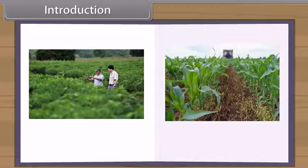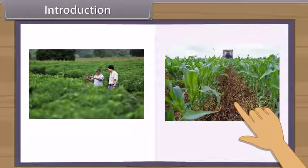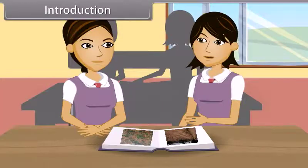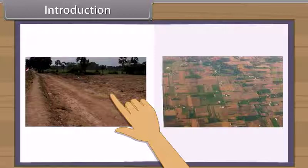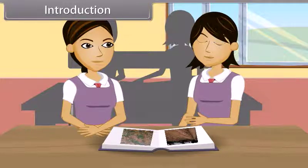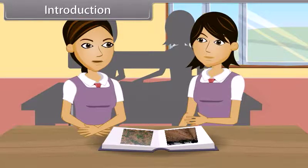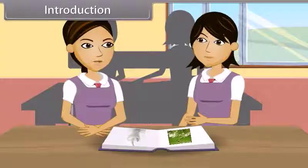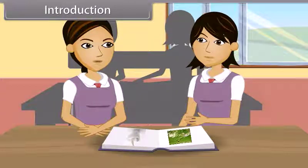To feed this growing population, we need more than a quarter of a billion tons of grain every year. Farming on more land will be required, but as our population is increasing, land for houses and industry is also increasing, resulting in a decrease in cultivable land. Therefore, it is necessary to increase our production efficiency for both crops and livestock.